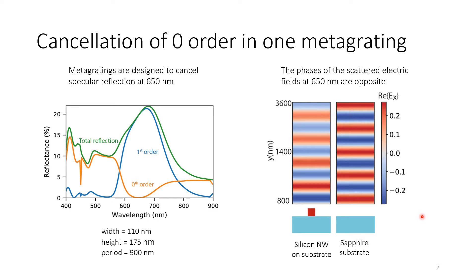I can also show the cancellation of reflection from the substrate and the scattering of the silicon nanowire. The electric field simulation shows: first, reflection from the sapphire; second, scattering from the nanowire on the substrate — and you can see that the fields are out of phase and destructively interfering. We fabricated these structures in our nanolab. In the SEM image from the top, you can see the nanowires aligned next to each other in different metagratings, with the pitch between nanowires decreasing in one direction, and then a new supercell starting.